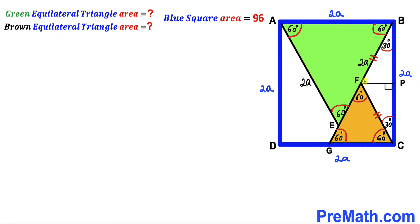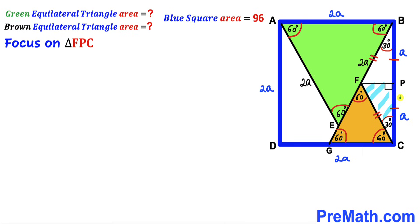Therefore we conclude that side BF equals side CF. Now I have dropped a perpendicular FP on base BC. Since we are dealing with an isosceles triangle, segment BP equals segment CP. We know the whole side length is 2a, so side BP is lowercase a and side CP is lowercase a as well. Focusing on the right triangle FPB, we can see one angle is 30 degrees and the right angle is 90 degrees, so the remaining angle must be 60 degrees. Therefore triangle FPB is a special 30-60-90 triangle.